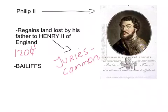Philip II also starts more democratic processes which strengthen the power of the monarch by sending out bailiffs, also known as royal officials, all around his kingdom to oversee the courts and to collect taxes for the king. This meant the king had more power and was able to better know what was going on in his kingdom.